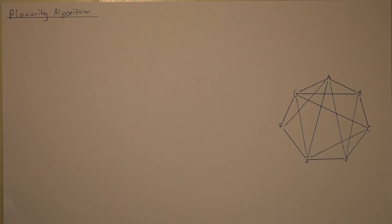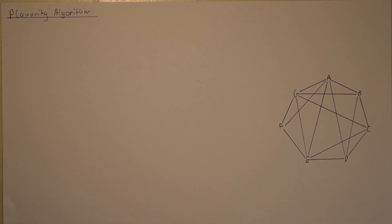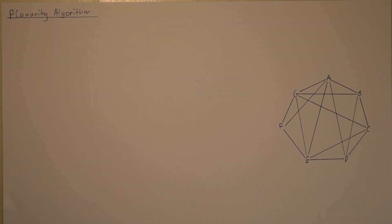Hello everyone. In this revision tutorial I am going to show you how you can use the planarity algorithm to find whether a graph is planar or not. In order to find out whether a graph is planar, you first need to identify a Hamiltonian cycle in the graph, then draw a regular polygon with all the arcs matching the edges in the Hamiltonian cycle, and then put the remaining edges inside the polygon.